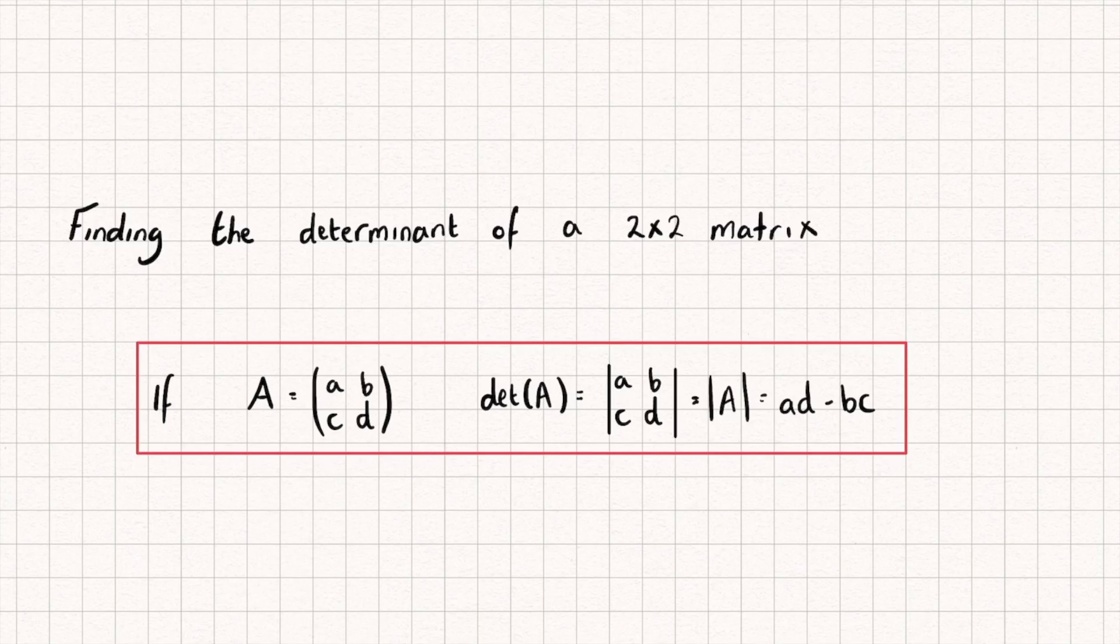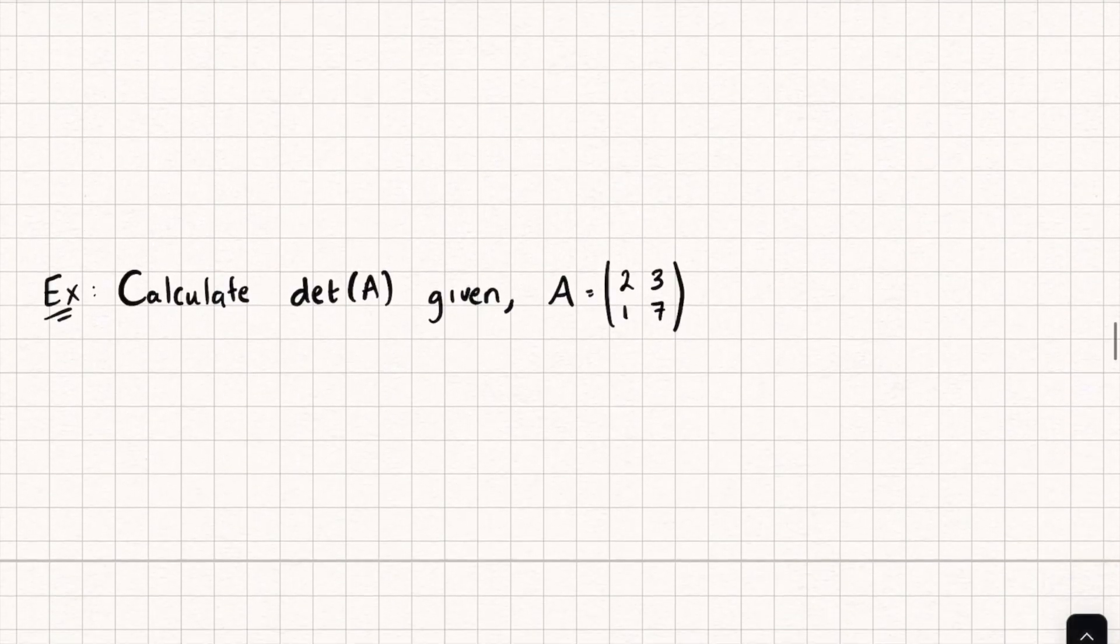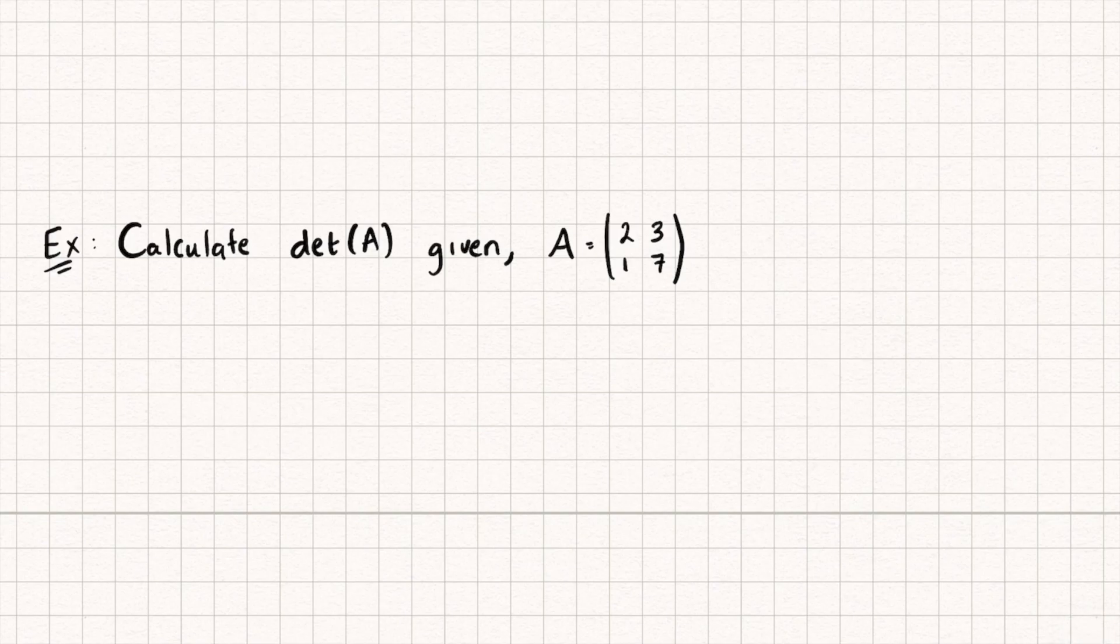So let's have a look at a couple examples, because it's pretty straightforward. Here we have a matrix A, and we're asked to calculate the determinant. So the determinant of A is going to be equal to the product of the leading diagonals, so 2 multiplied by 7,